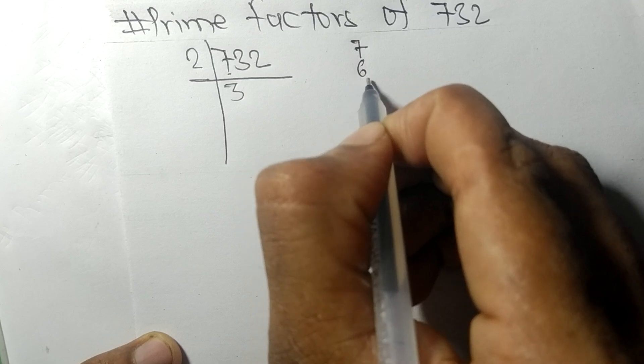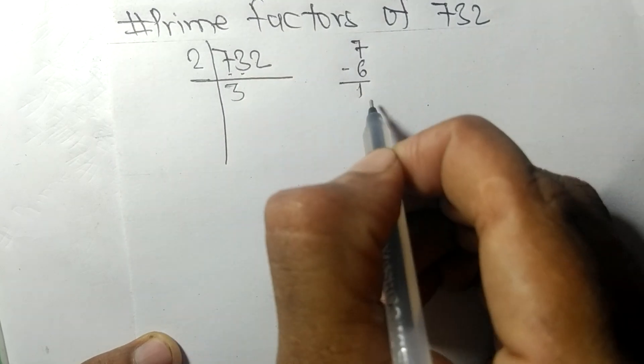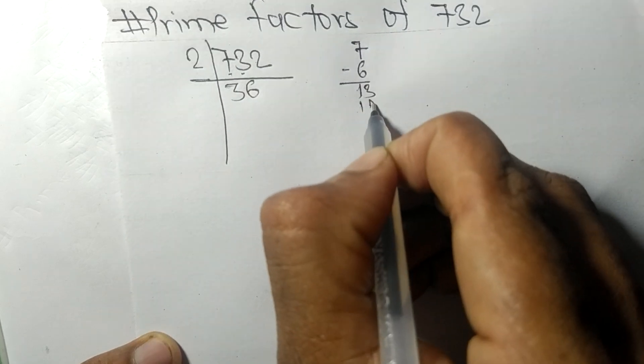Two times 6 means 12. On subtracting we get 1, and these two twos will carry forward.